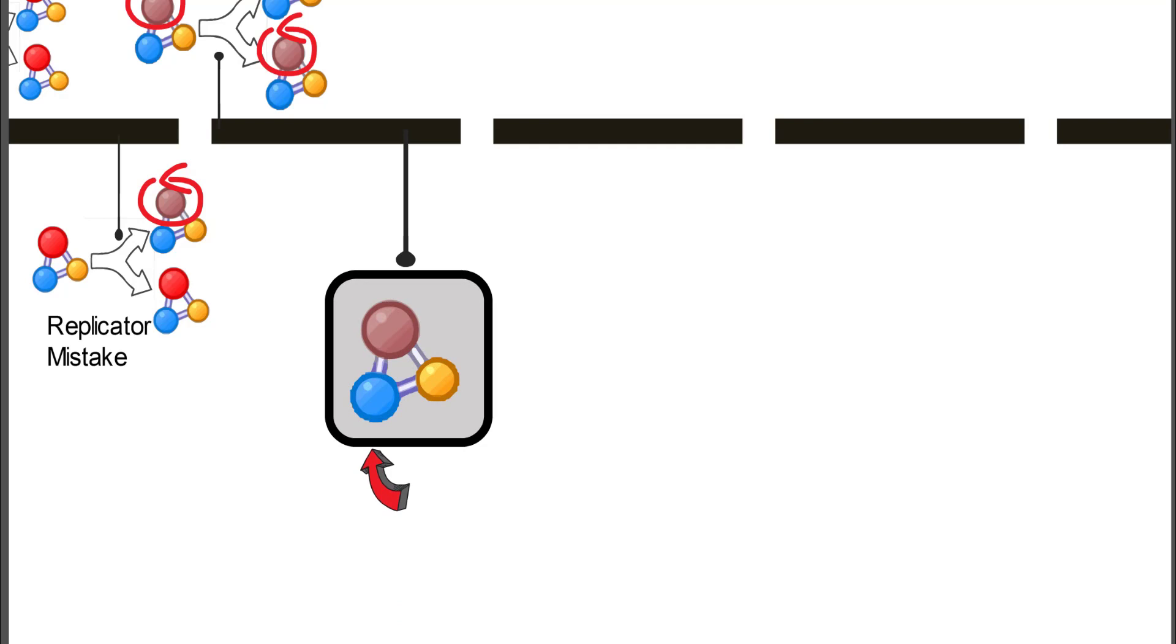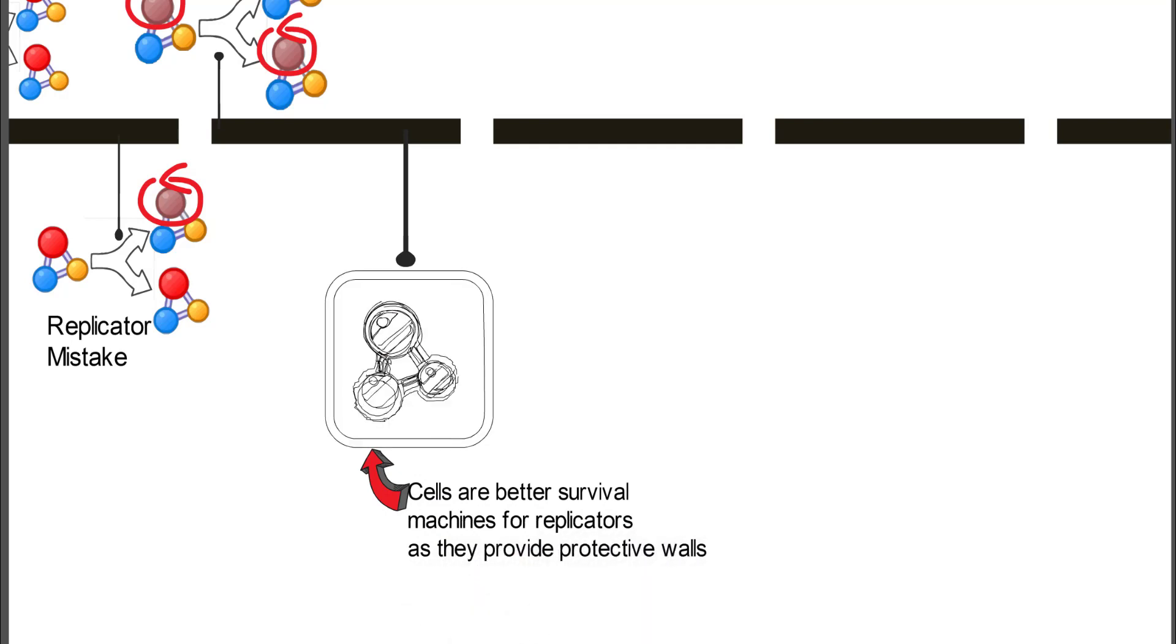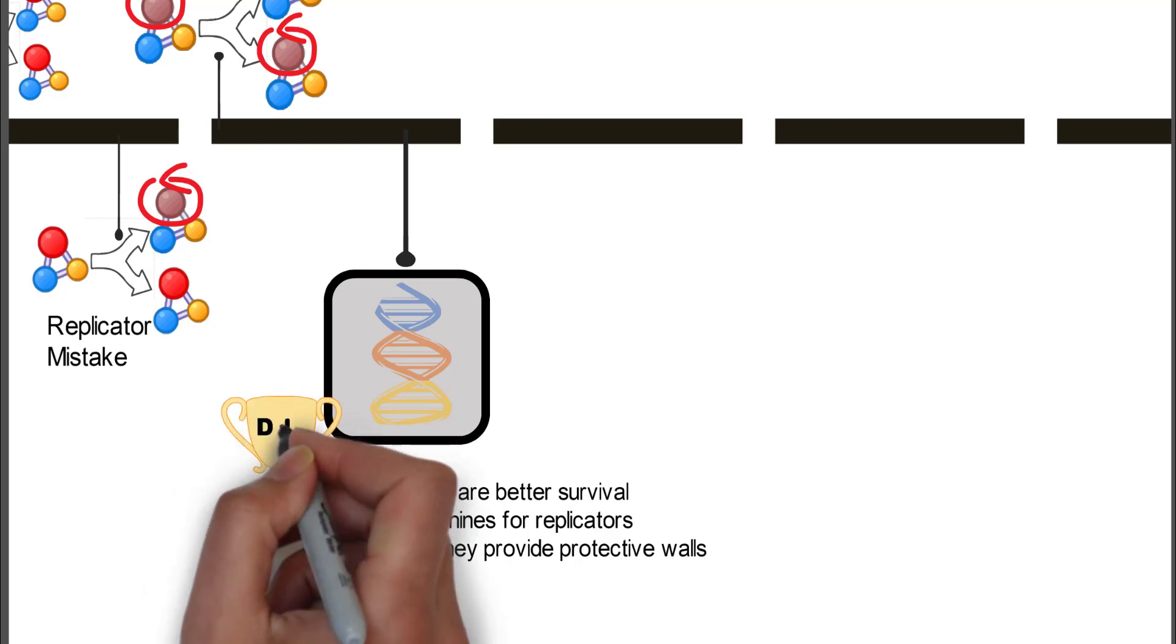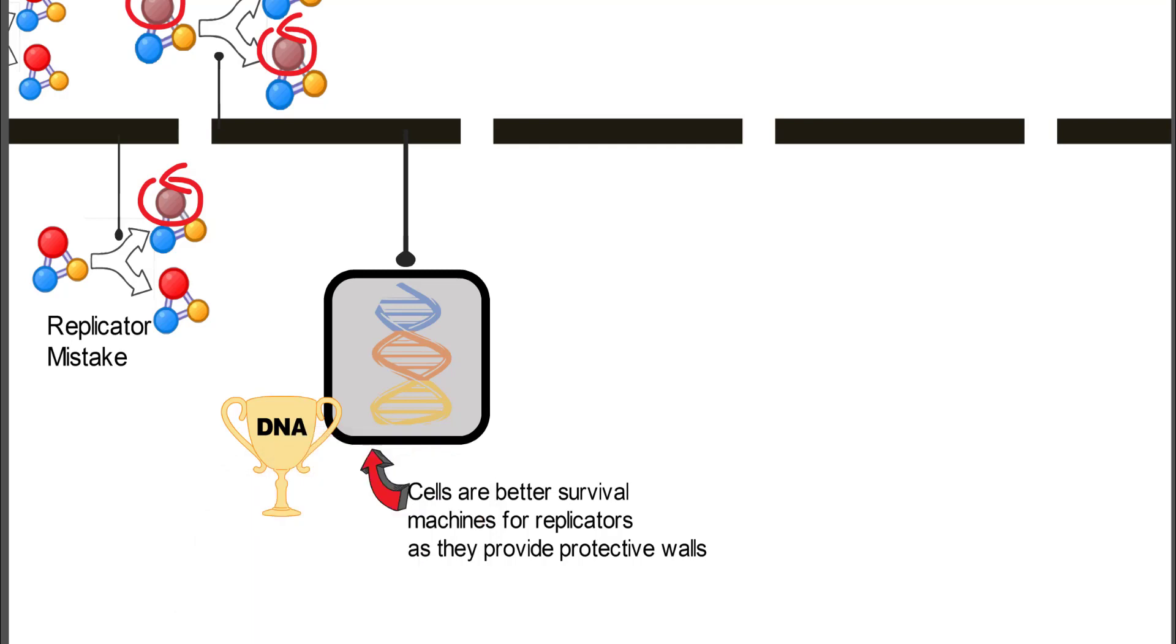As we went along, we found that all of a sudden we have cells that can surround the replicators. They're better survival machines for the replicators because they provided those protective walls. And then the DNA, we found, is the master replicator for life survival machines.